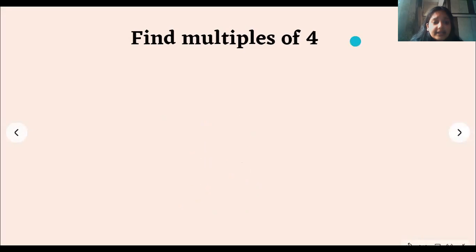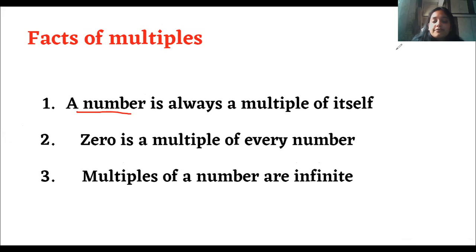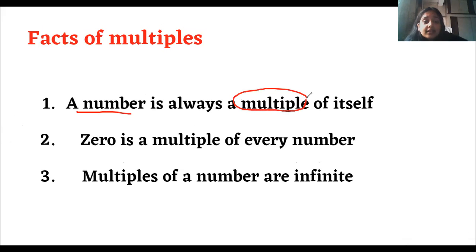There are some facts — some rules about multiples. The first rule is: a number is always a multiple of itself. For example, when we did for five, on day one we had five biscuits; when we multiplied four by one, we got four. So a number is always a multiple of itself. Just like in factors we learned that a number is always its own factor, here also a number is always a multiple of itself.